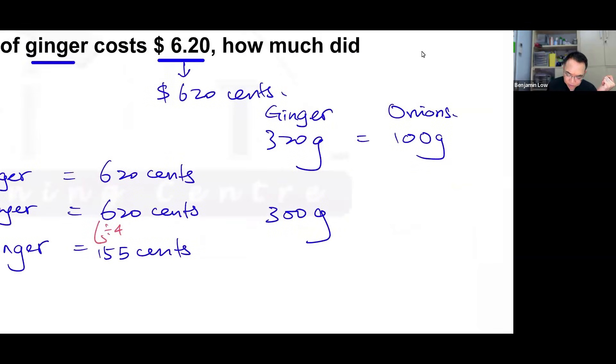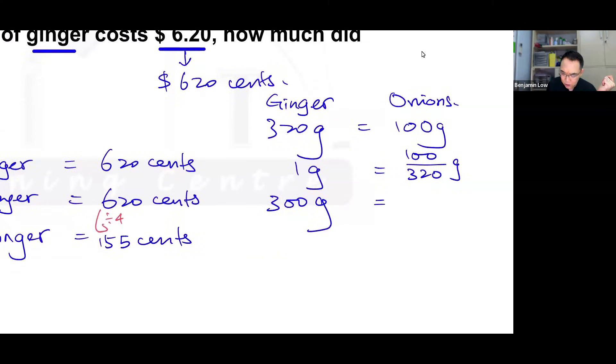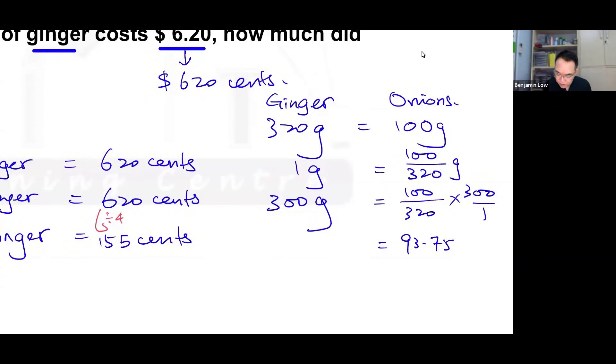So to do that, I should first find one gram of onion. So one gram of onion is 100 divided by 320. And then to get 300, I take 100 over 320 times 300. I'm going to assume this is a paper two question so that we can hurry the working along. So it's 100 divided by 320 times 300, which gives me 93.75 grams of onions.